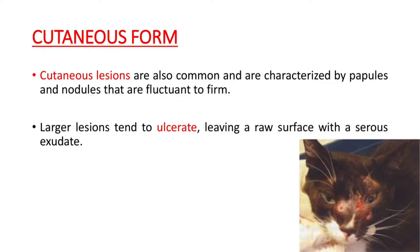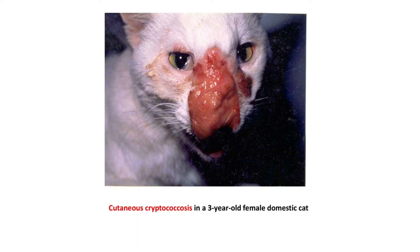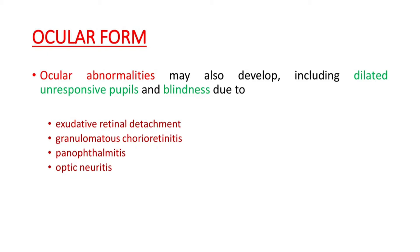The cutaneous form in cats: cutaneous lesions are more common and are characterized by papules or nodules that are fluctuant. Larger lesions tend to ulcerate, leaving a raw surface with a serous exudate. This is an example of cutaneous cryptococcosis showing a severe lesion in a three-year-old female domestic cat.